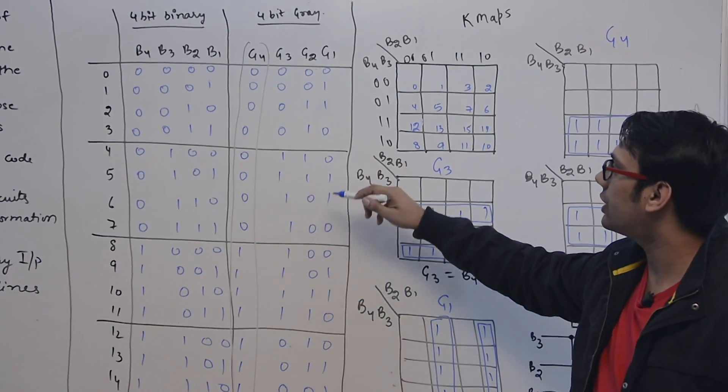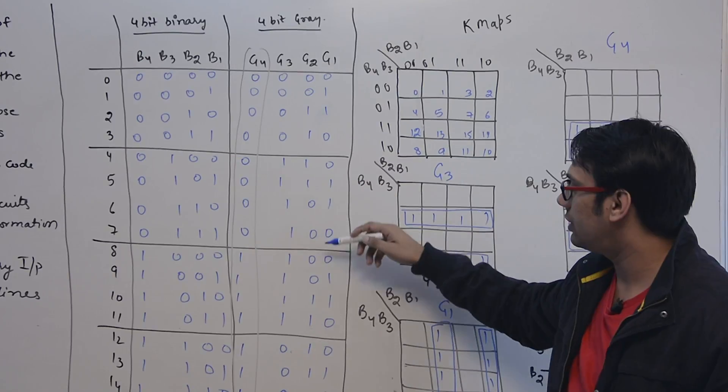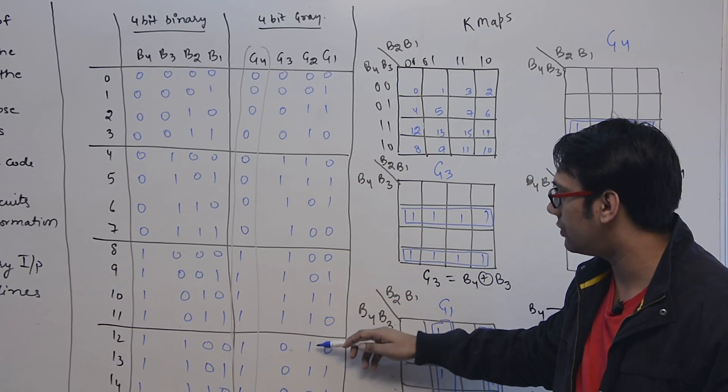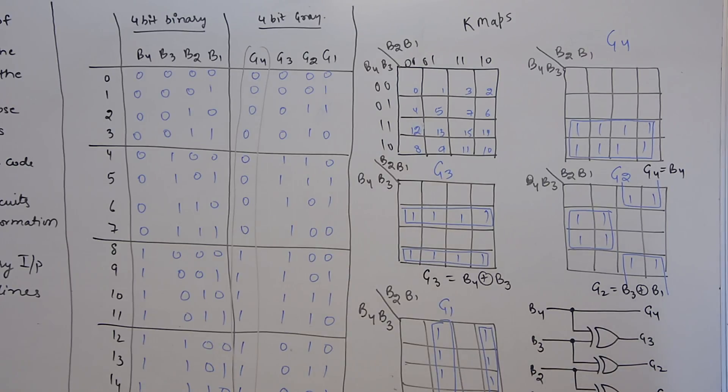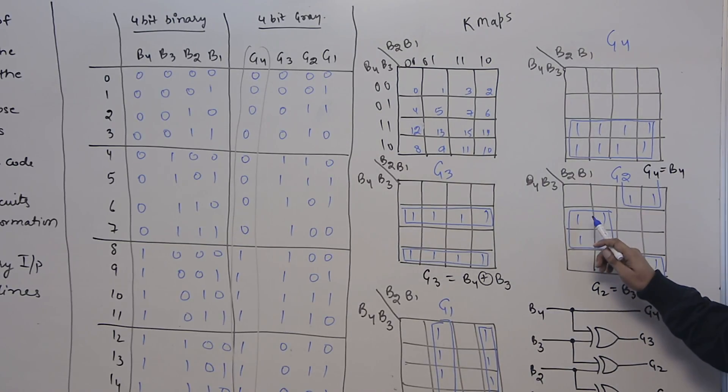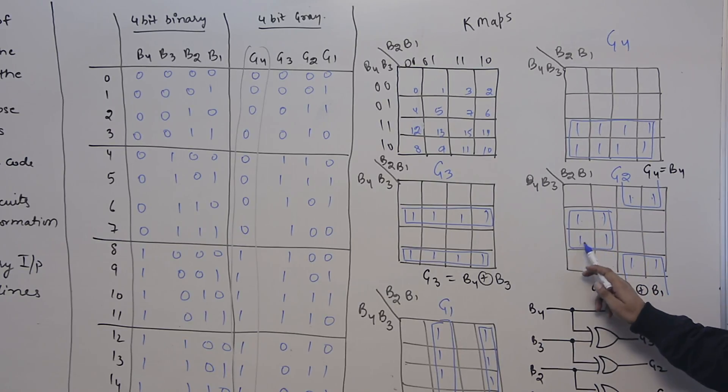If you talk about G2, G2 is 1 at 2, 3, 4, 5, and then 10, 11, 12, 13. So G2 is true at 2, 3, 4, 5, 10, 11, 12, and 13.